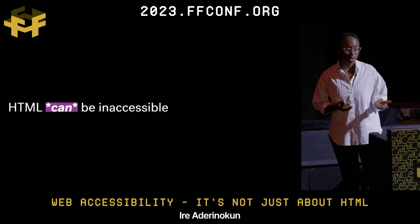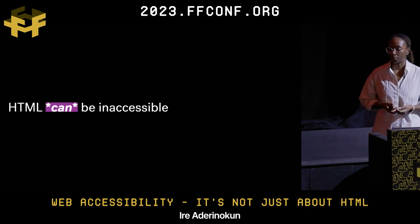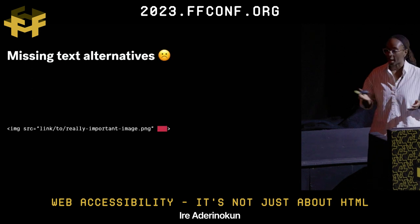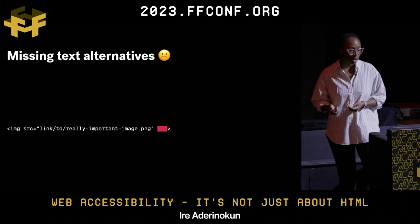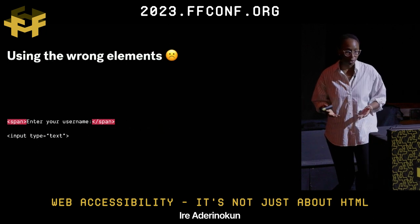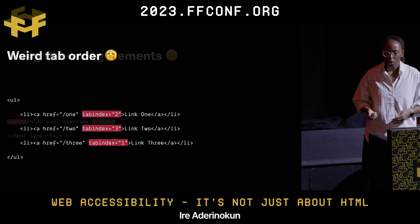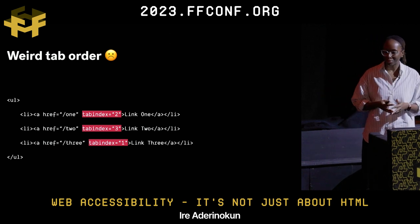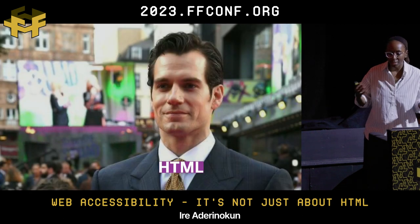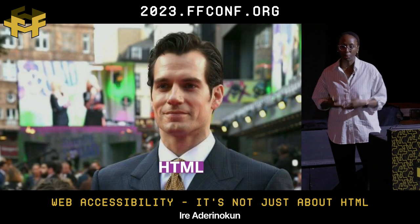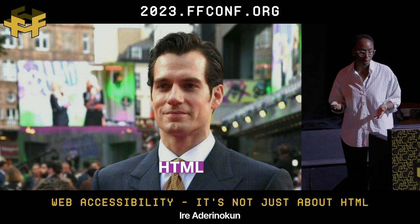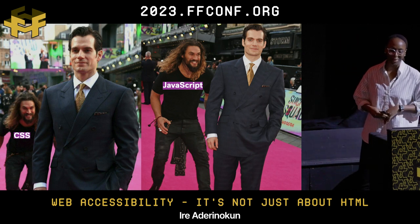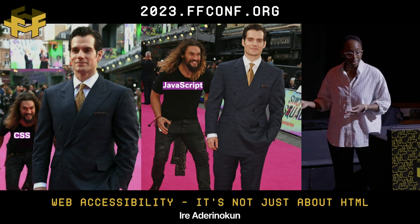That's not to say HTML can't be made inaccessible — there's definitely stuff we can do to make a purely HTML website inaccessible. We could fail to provide text alternatives for non-text content, or use the wrong elements, like a span instead of a label. Or you can actively do damage using tab index to change things around. But for the most part, plain HTML is pretty good on its own. When you add CSS and JavaScript, it can really start to mess things up.